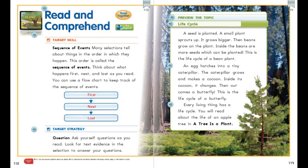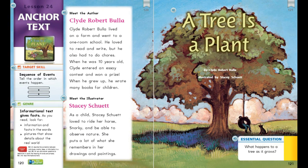This selection is called 'A Tree is a Plant' and it was written by Clyde Robert Bulla. He lived on a farm and went to a one-room school. He loved to read and write but also had to do chores. When he was 10 years old, Clyde entered an essay contest and won a prize, and when he grew up he wrote many books for children. Our illustrator is Stacy Schuett. As a child she loved to ride her horse Snorky and to observe nature, and she puts lots of what she remembers into her drawings and paintings.